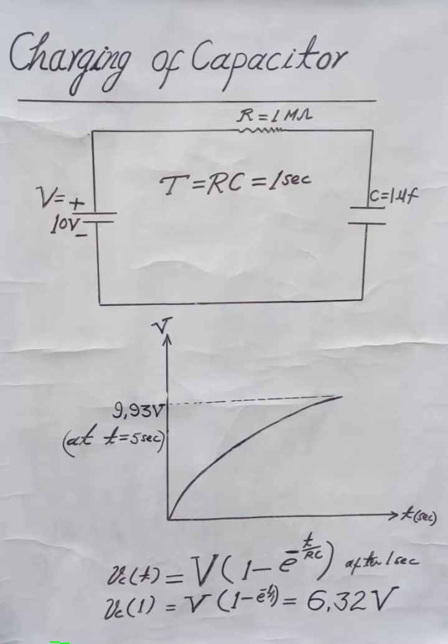The voltage across the capacitor after one second — at time T equal to one second — is 6.32 volts DC.